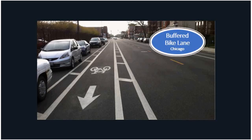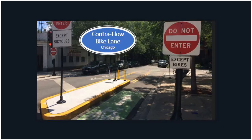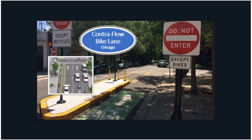Here's an example from Chicago — a contraflow lane on a one-way street. There's a special lane with a yellow divider where bikes can travel in the opposite direction. It creates more options for bicyclists and reduces barriers, allowing them to use a quieter street rather than a parallel street that's busy and uncomfortable for bikes.